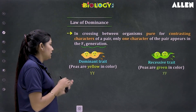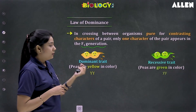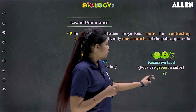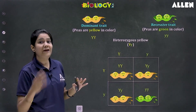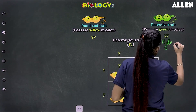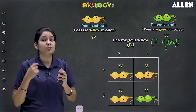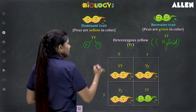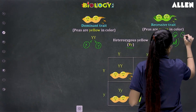Taking another example: the dominant trait is peas that are yellow in colour — homozygous yellow. The recessive trait is peas that are green in colour — homozygous recessive. When we conduct a cross between them to obtain the F1 generation, the F1 hybrid is in the heterozygous yellow condition, having alleles from both parents. During gamete formation, capital Y is the gamete from the homozygous yellow parent, and small y is the gamete from the homozygous green parent.